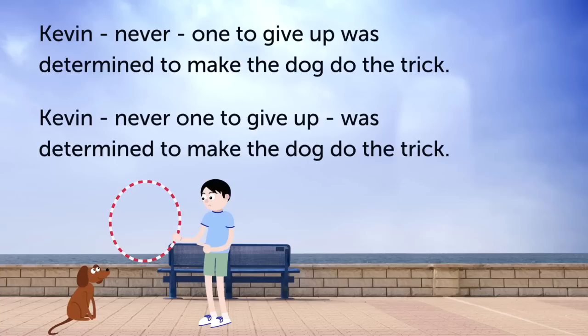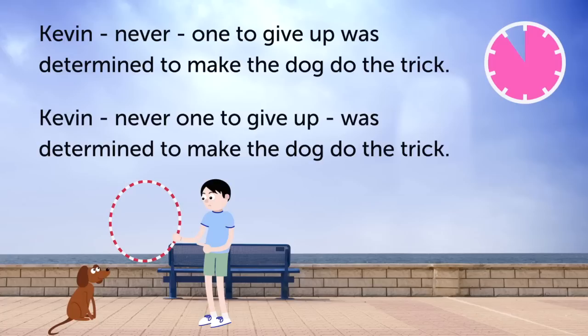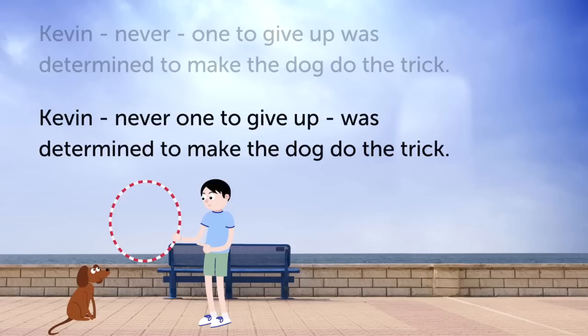Which of these sentences uses dashes correctly? Kevin — never one to give up — was determined to make the dog do the trick.